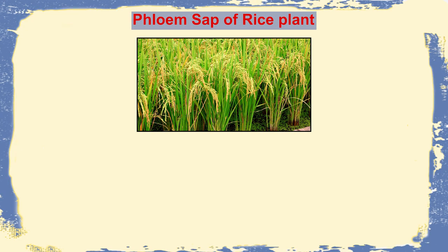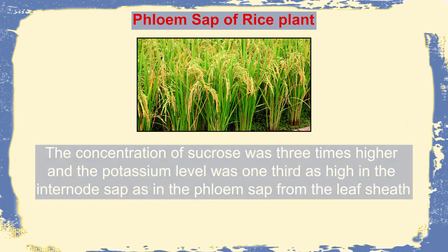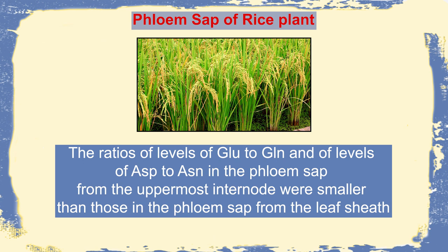Phloem sap may vary between plants. In rice, though sucrose is the major component, amino acids or potassium may vary compared to other plants. The concentration of sucrose and potassium is higher in the internode than in the leaf sheath. Similarly, glutamic acid or glutamine may be higher in the phloem sap compared to the leaf sheath or other components.